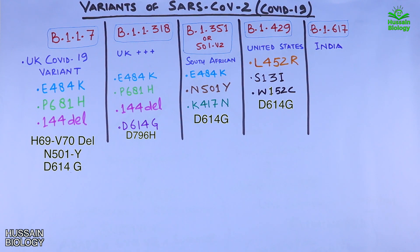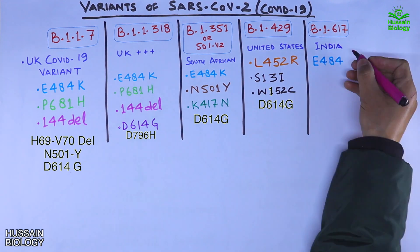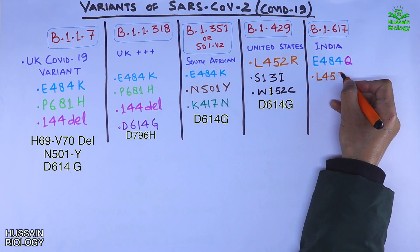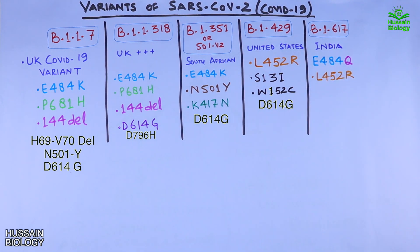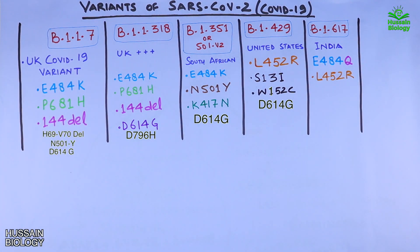Next is the B.1.617 variant, which predominates in India and is a variant of concern there. It is a double mutant with two important mutations: E484Q and L452R. The E484Q mutation differs from the E484K mutation in only one amino acid substitution change.